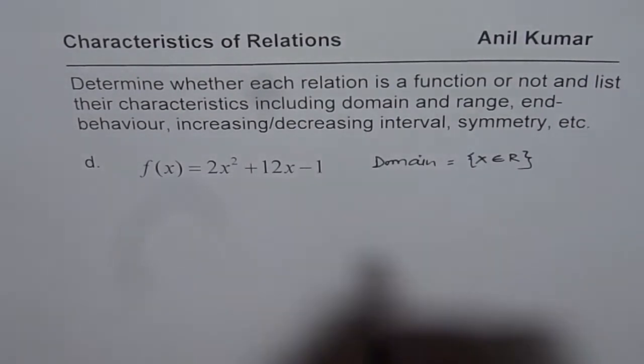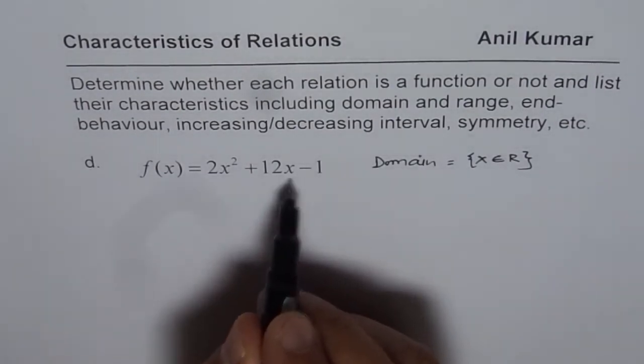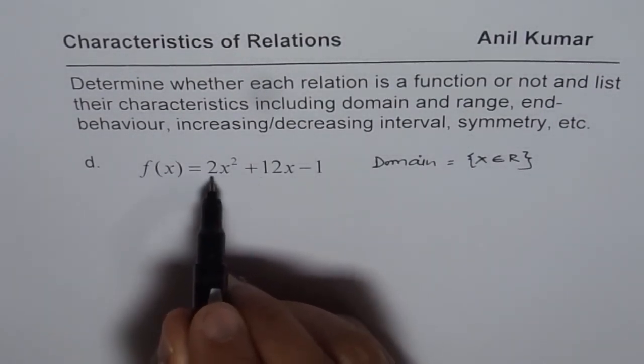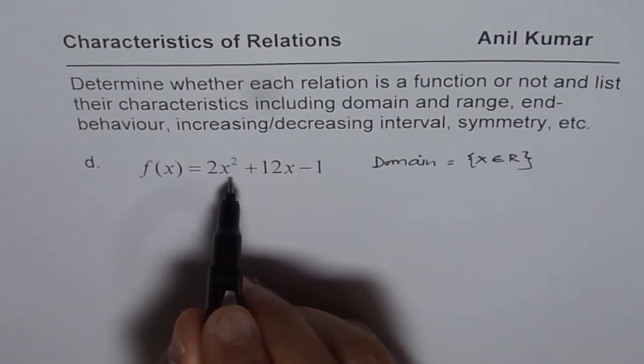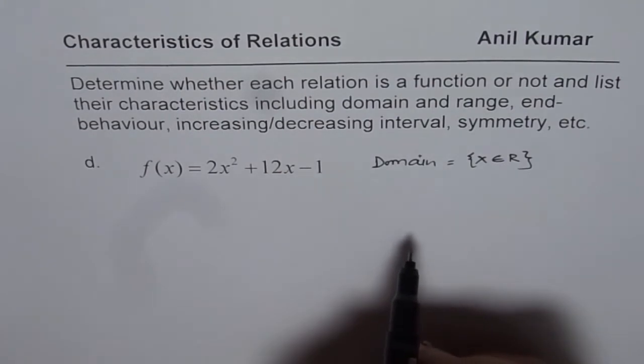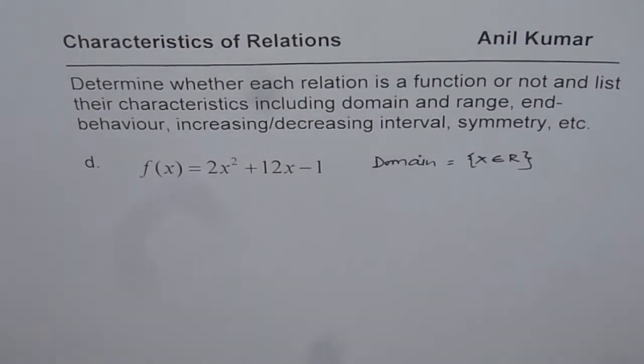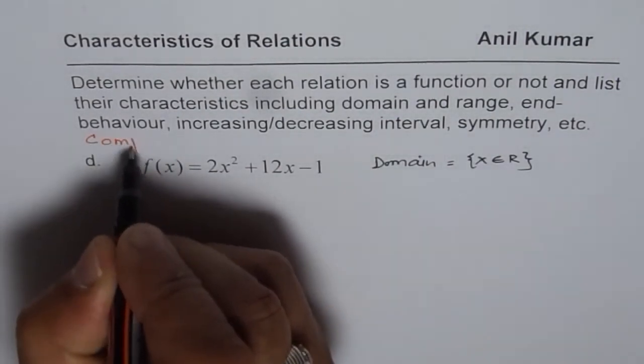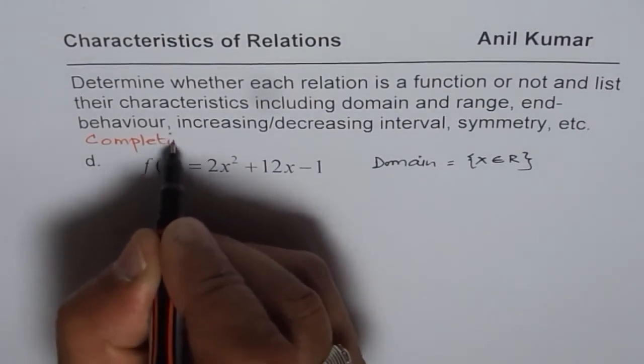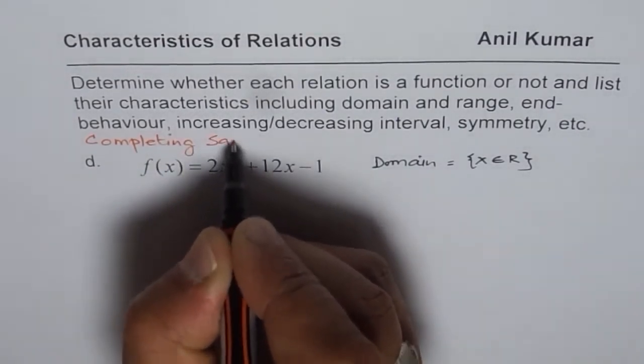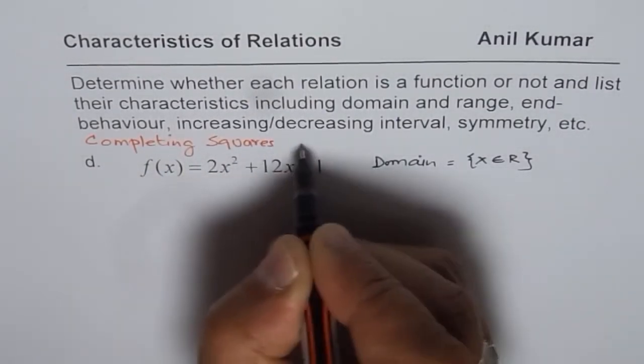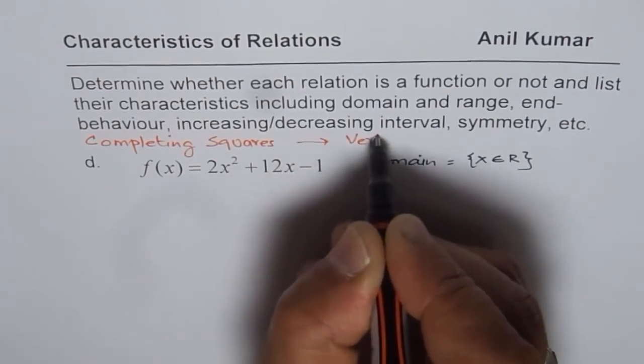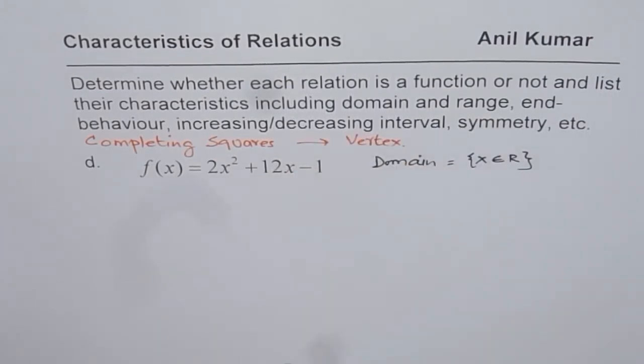How about range? To find the range, we need to find the vertex. We know it opens upwards. So once we know the vertex, then we can actually write down the range. Now, vertex could be found by completing squares. So I hope you can go through steps for completing squares to find vertex. So here are the steps.